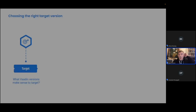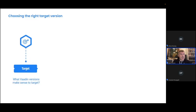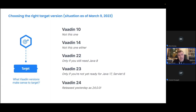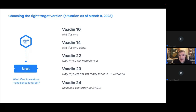Right now there are actually five different versions of Vaadin that are supported without an extended maintenance contract: Vaadin 10, Vaadin 14, Vaadin 22, 23, and 24. It's very unusual in our history that we have so many major versions supported this way. I would say Vaadin 10 and Vaadin 14 are not things you should consider, and I'll explain more about that in a few moments.